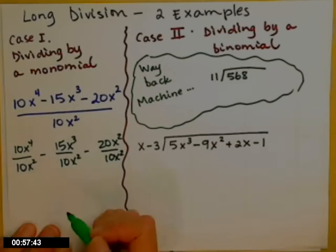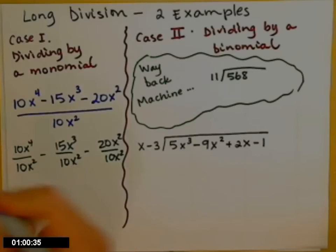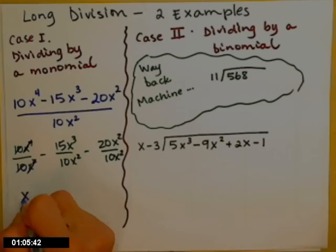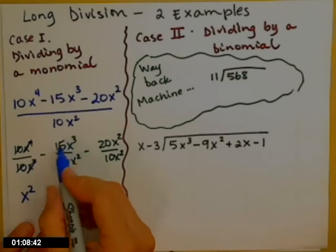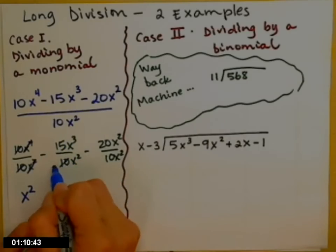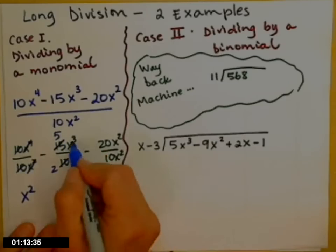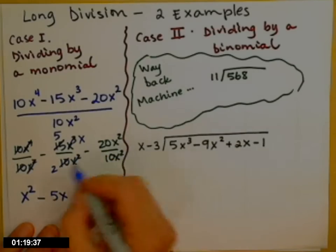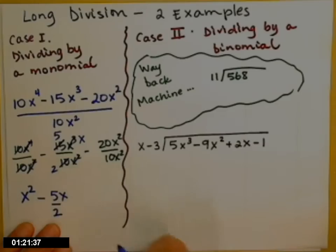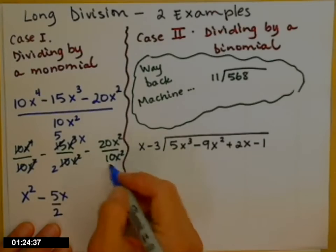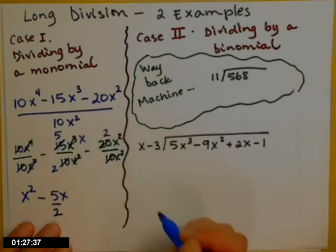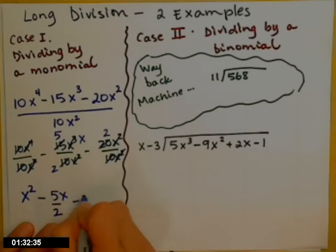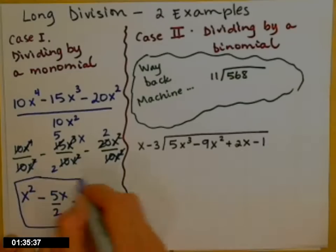So 10x to the fourth over 10x squared — the tens go away, and x squared into x to the fourth leaves behind x squared. Here the 10 and the 15 — take out the 5 that's common; x squared and x cubed leave behind an x, so we have minus 5 halves x. Last fraction: the 20 and the 10 leave behind 2, and x squared completely cancels, leaving behind 1. That gives the final answer.